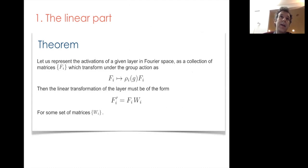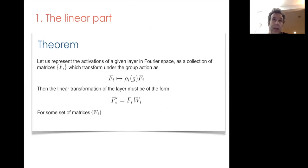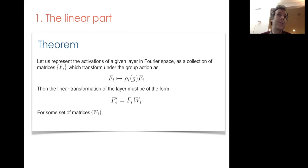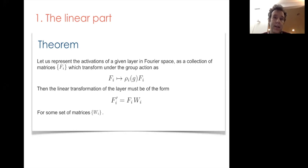We can now rephrase the theorem for what the linear layer is allowed to do, entirely in Fourier space. The activations are just these matrices — one per irreducible representation — and the linear operation is simply matrix multiplication by a learned weight matrix: f̂'_i = f̂_i · W_i. That's the only thing the linear part of a neuron is allowed to do in order to guarantee equivariance is preserved.